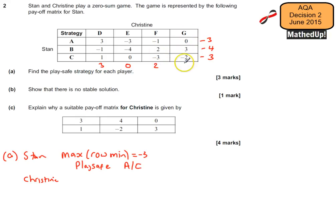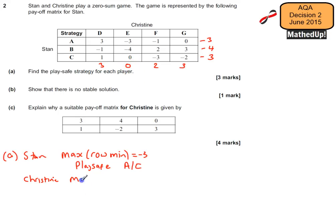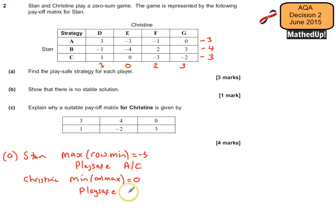The worst case scenario for another column is a loss of 2, and over here it's a loss of 3. We're now looking for the minimum of the column maximums — the best of the worst case scenarios. That would be a loss of 3, a loss of nothing, a loss of 2, and a loss of 3. A loss of nothing is the best, so the minimum of the column maximums is 0.